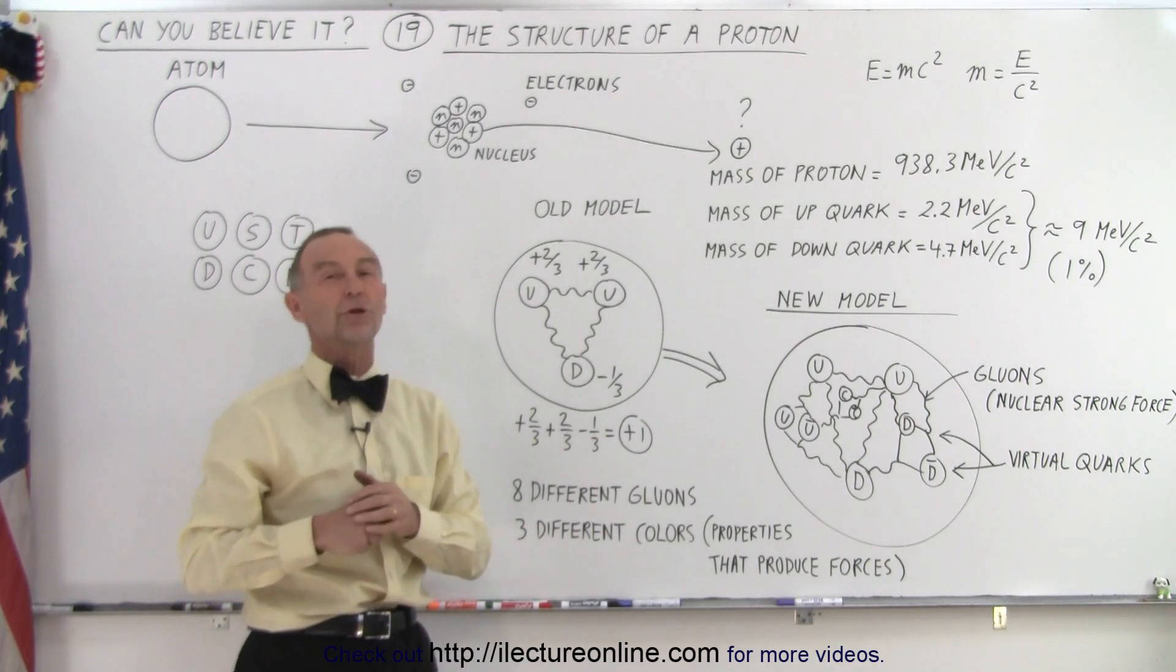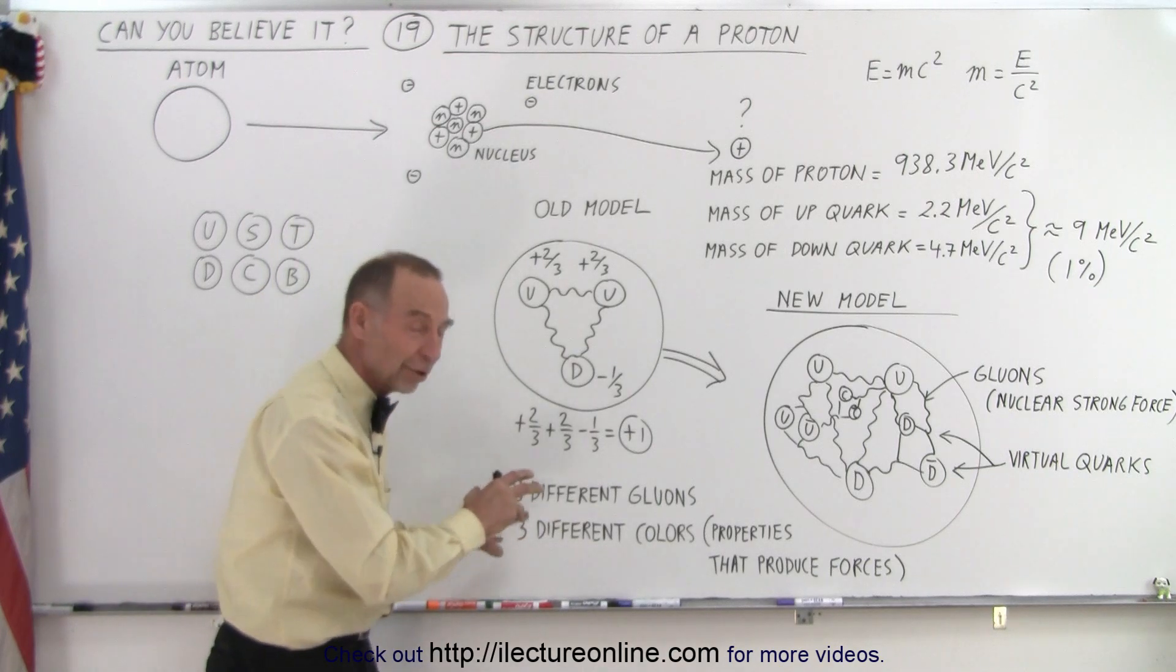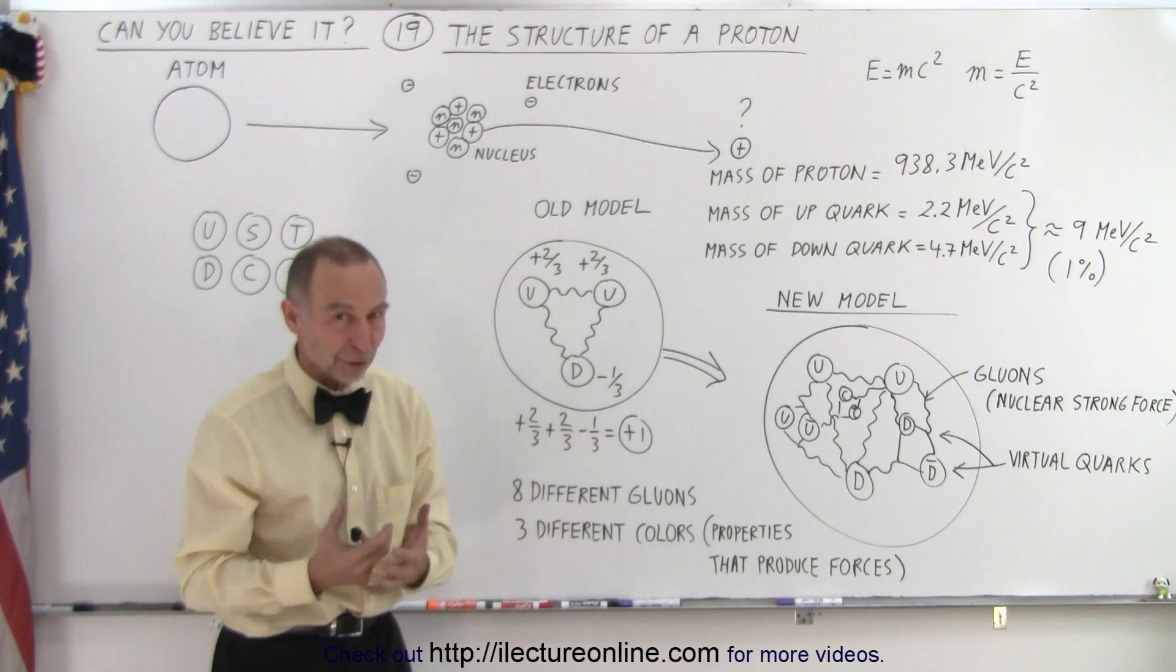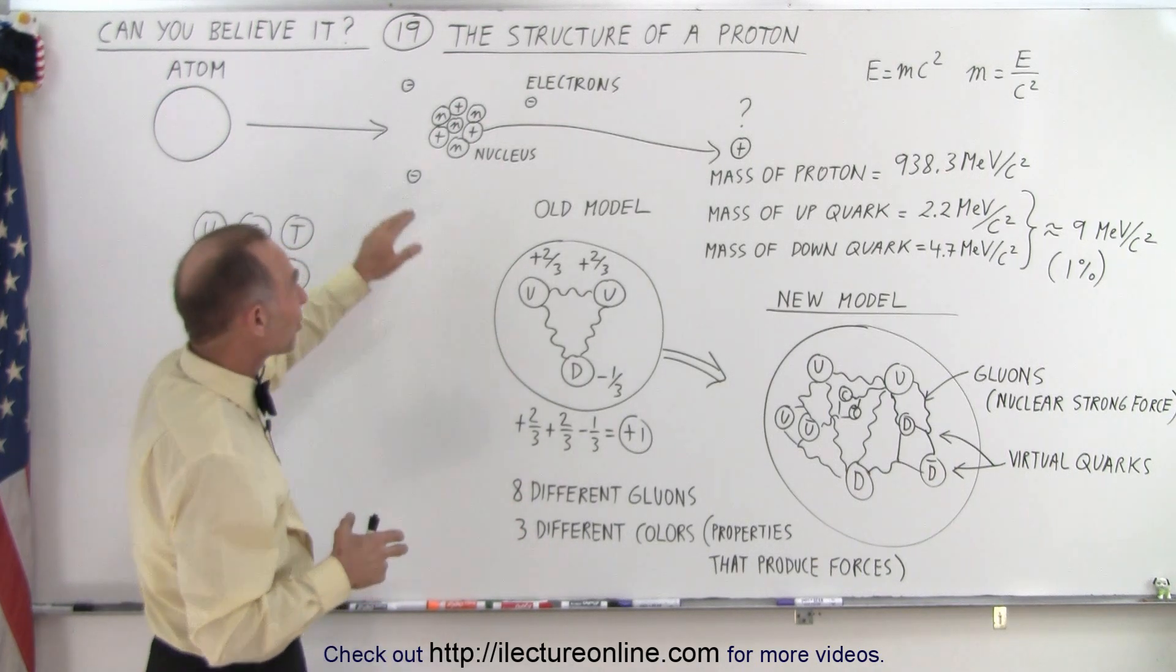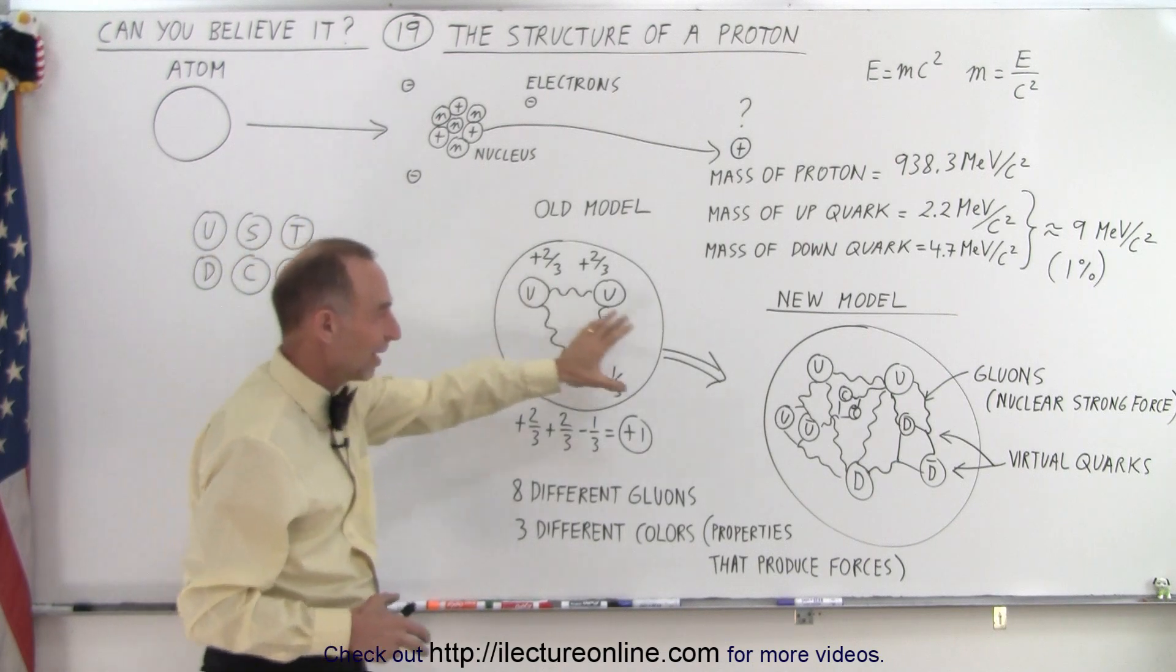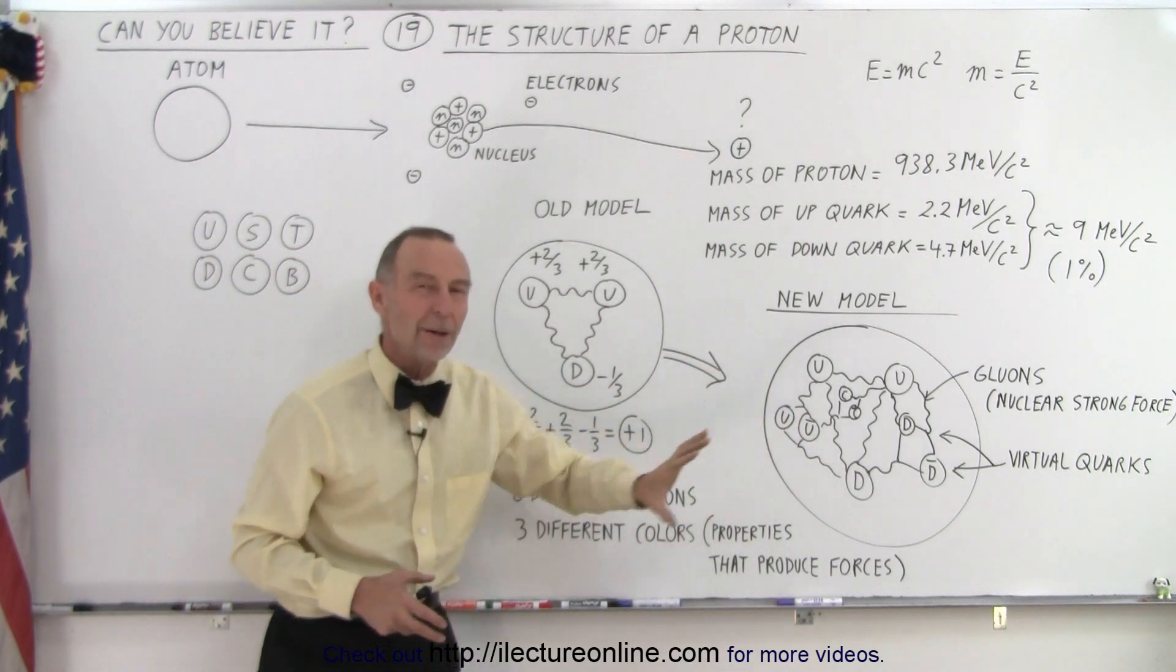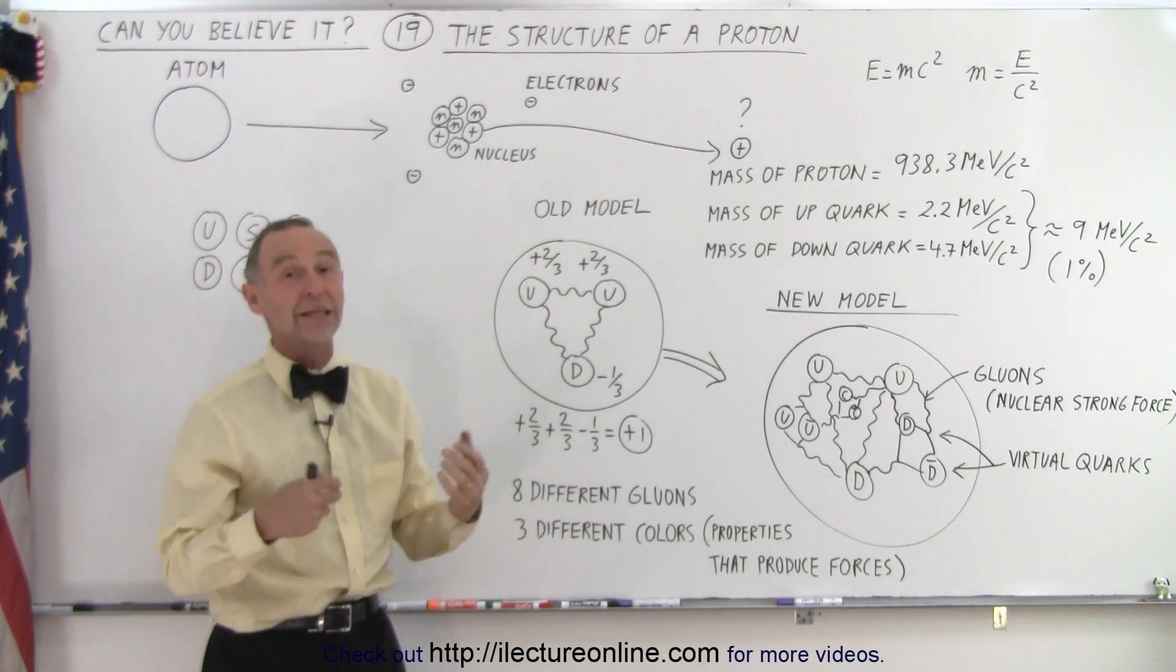And there's eight different gluons, each with its own different property. Now, we won't go into the details of that yet, that's much more complicated. But you can see that, that nice little model that we used to have about atoms and nuclear structure, all of a sudden has become way more complicated. But as we're delving into the secrets of this,